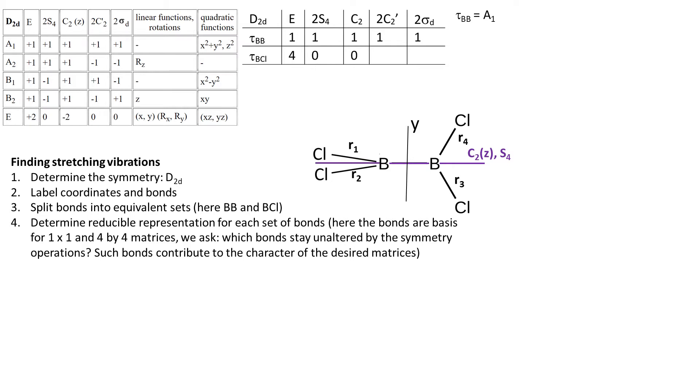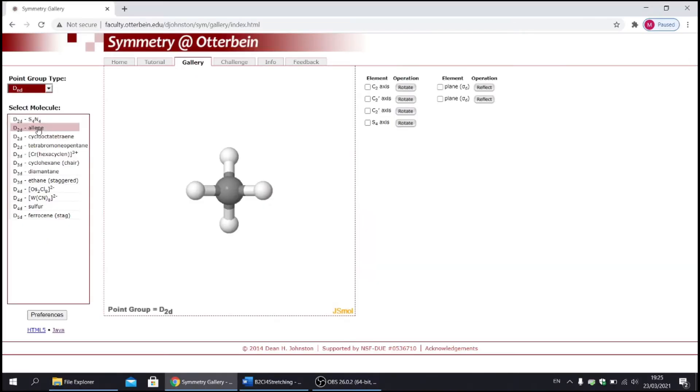Then we have C2Z. Of course all the BCl bonds move. Then we have 2C2'. If you cannot see these symmetry operations, please visit this website and notice that allene has almost identical structure as diboron tetrachloride. And of course it has the same symmetry D2D.